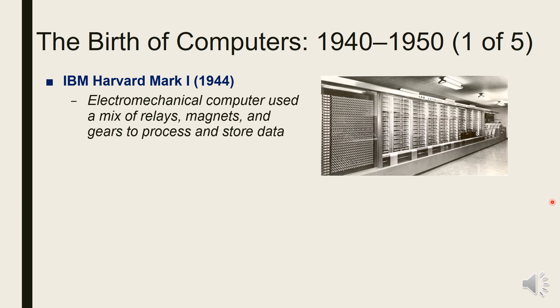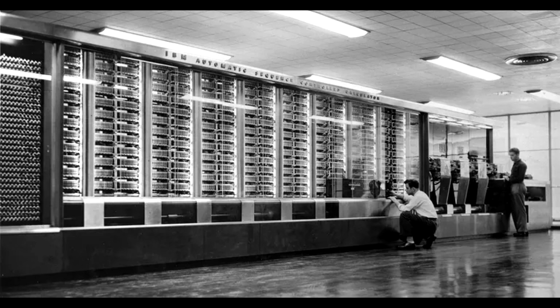The Harvard Mark I, or Mark I computer, appeared in 1944. It was an electromechanical computer which used a mix of relays, magnets, and gears to process and store data. It was originally called the Automatic Sequence Controlled Calculator by IBM, and was a room-sized relay-based calculator.